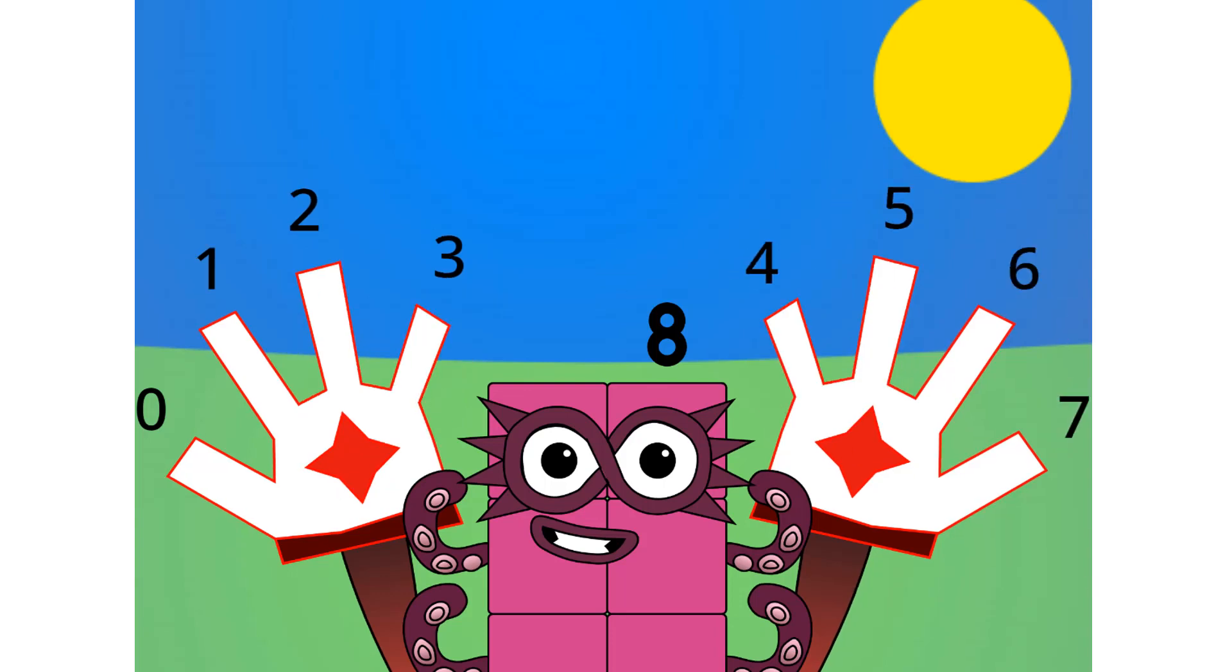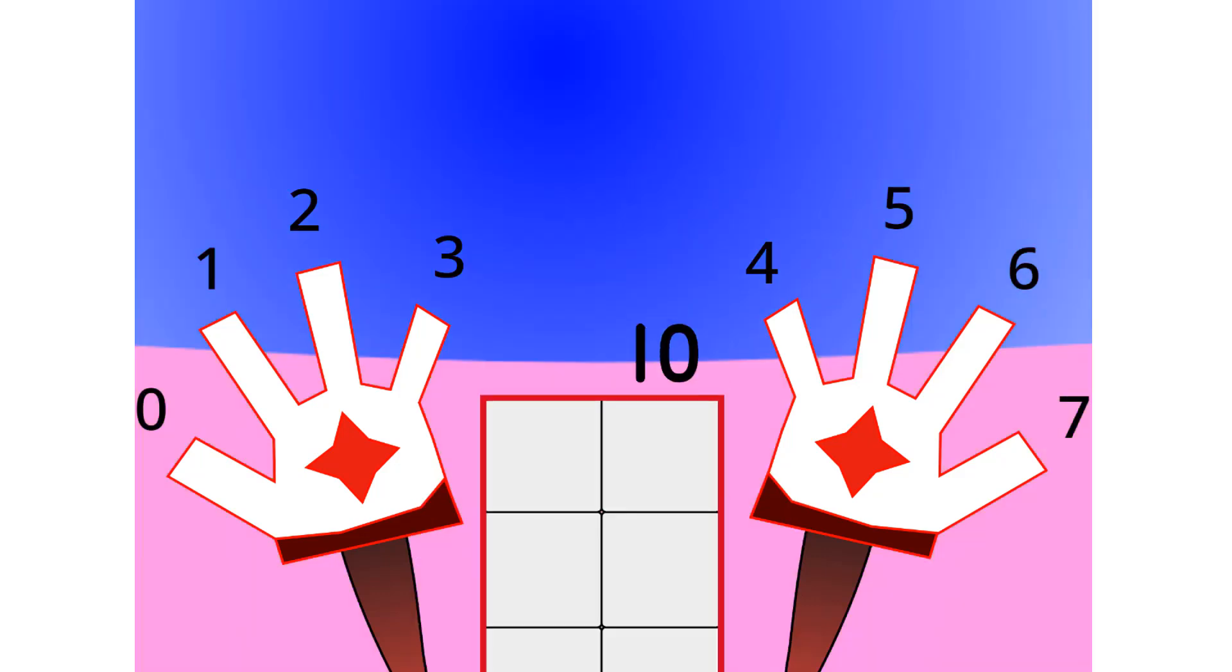As you can see, cartoon characters, like Mickey Mouse, have 4 fingers on each hand. We call this base 8, or octal. Oh wow. Looks like I am no longer octoblock. But I am still called 8. So yeah. This base has 8 digits.